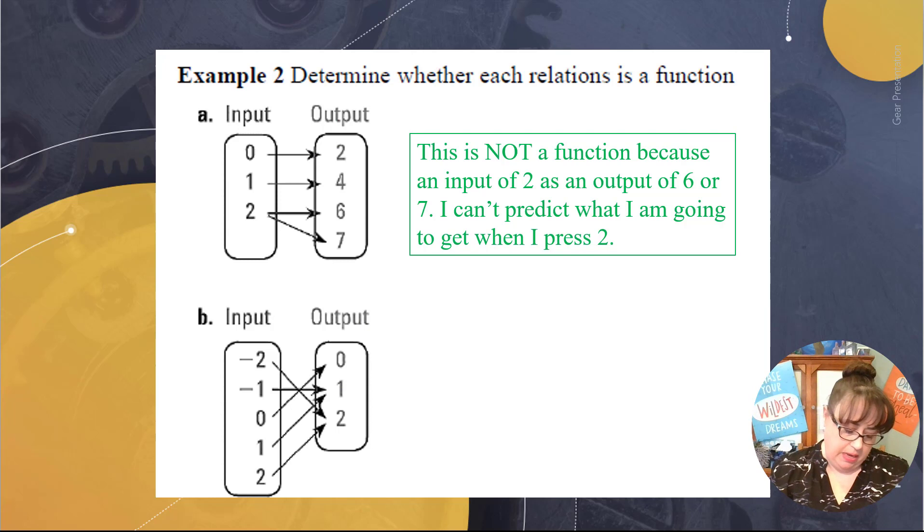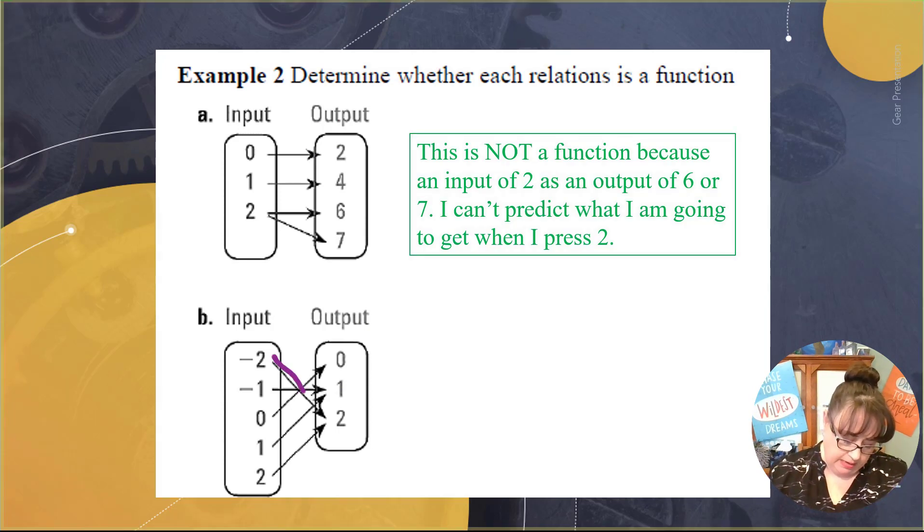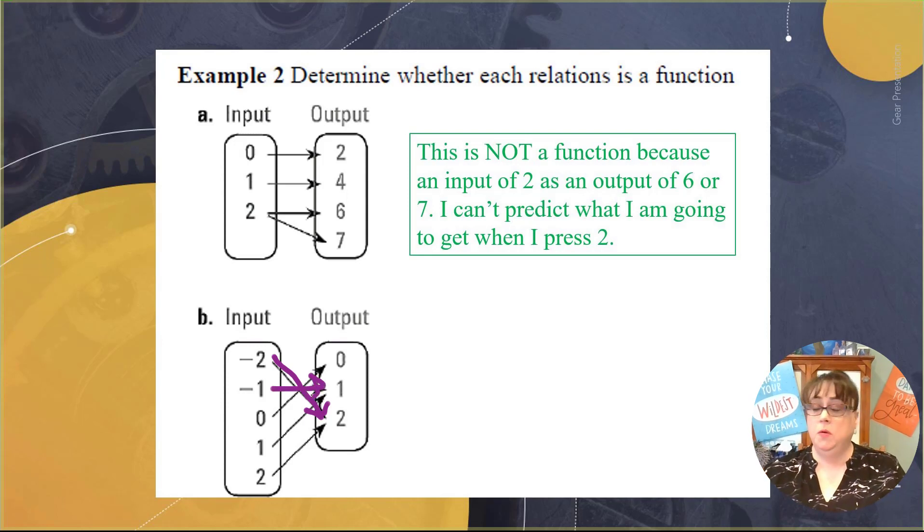So let's look at B. When I look at B and I press negative 2, I get a 2. That's good. And I can only get a 2 out. That's very predictable. So far, so good. When I press negative 1, I get a 1 out. Very predictable. I know what I'm going to get. When I press a 0, I'm going to get out a 0. I know what I'm going to get. It's very predictable.